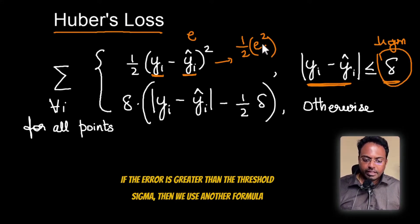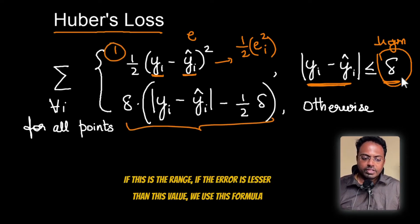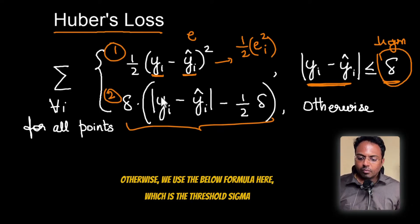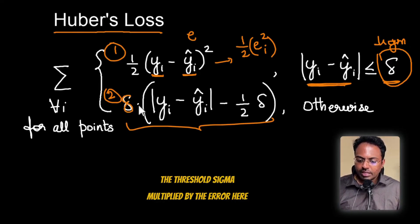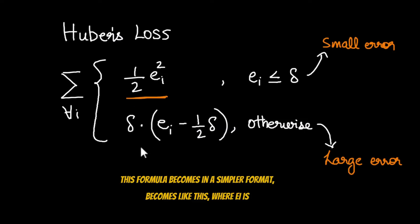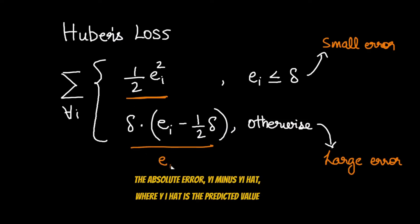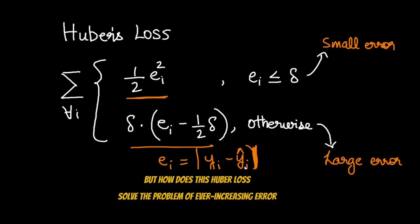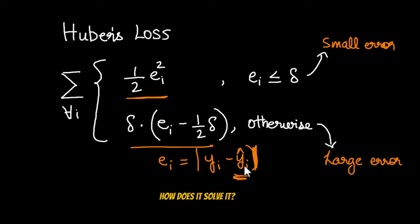If the error is greater than the threshold sigma, we use another formula: sigma multiplied by the absolute error (|yi − ŷi|) minus half of sigma. So the Huber loss formula uses the squared error for small residuals and switches to a linear formula for large residuals — but how does this solve the problem of ever-increasing error that tilts our line towards outlier data points?